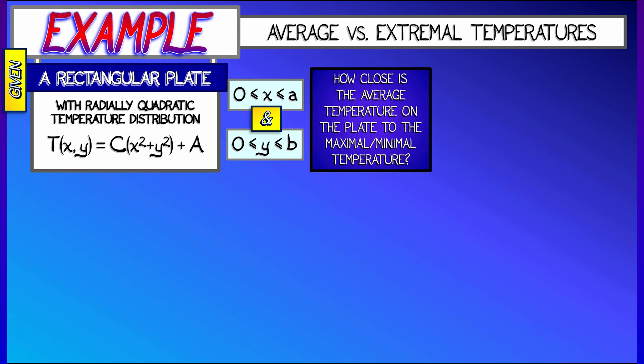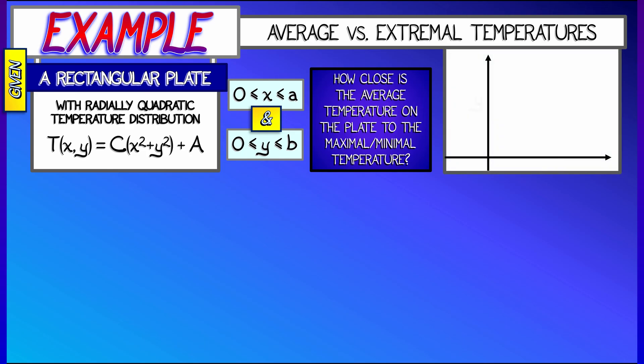The question is, how close is the average temperature on the plate to the maximal and minimal temperatures, where it's coolest at the origin and then hottest at that upper right-hand corner, A, B.